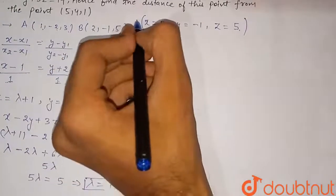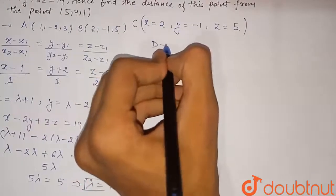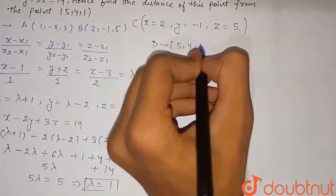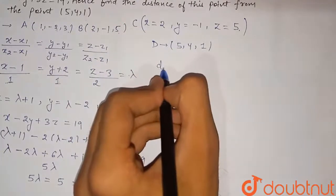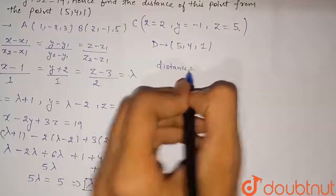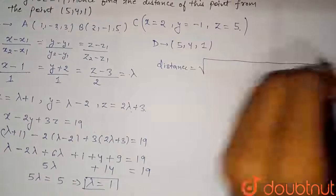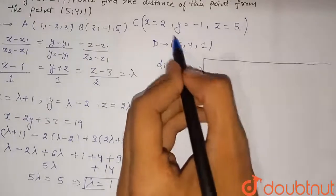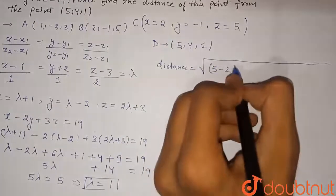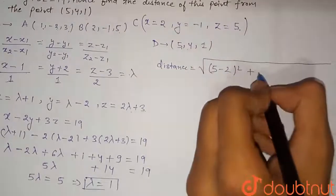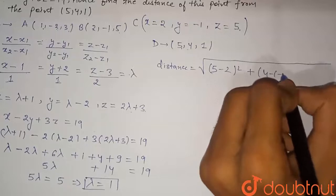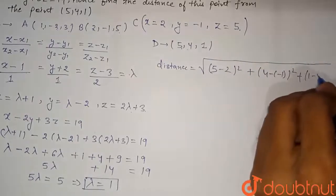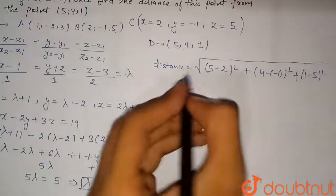We name this intersection point C = (2, -1, 5) and the given point D = (5, 4, 1). We need to find the distance CD using the distance formula: distance = √[(x₂ - x₁)² + (y₂ - y₁)² + (z₂ - z₁)²]. Substituting: √[(5-2)² + (4-(-1))² + (1-5)²].